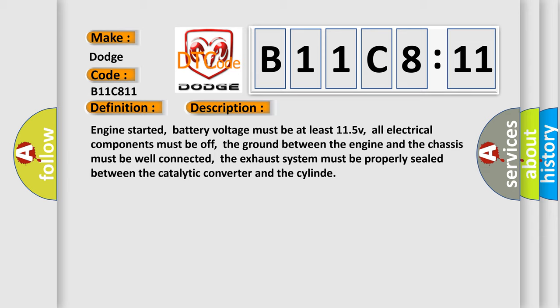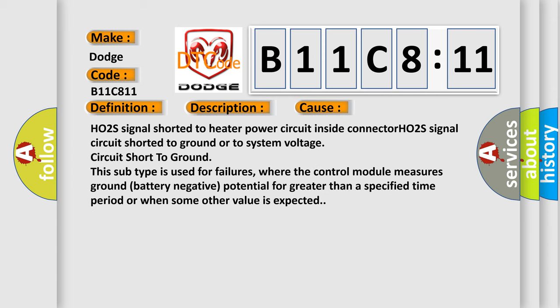This diagnostic error occurs most often in these cases: HO2S signal shorted to heater power circuit inside connector, HO2S signal circuit shorted to ground or to system voltage circuit short to ground. This subtype is used for failures where the control module measures ground battery negative potential for greater than a specified time period or when some other value is expected.